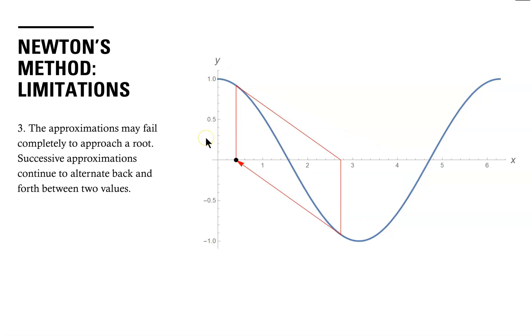And lastly, in some cases, the approximations may not approach a root at all. Successive approximations may continue to alternate back and forth between two values.